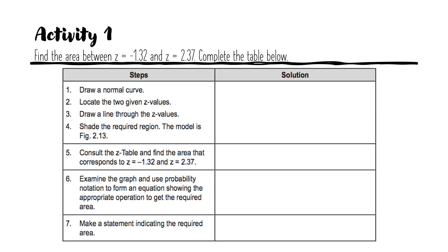For your activity, find the area between Z equals negative 1.32 and Z equals positive 2.37. Complete the table below, following all seven steps — from drawing your normal curve to making a statement indicating the required area. The keyword is 'between,' so you know how to set up your probability notation.